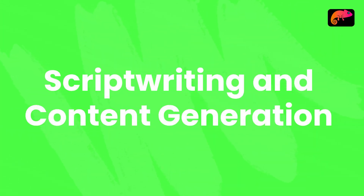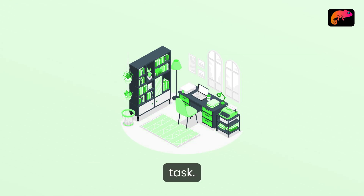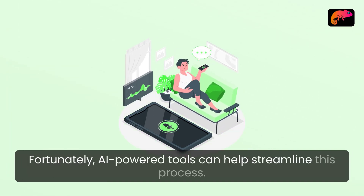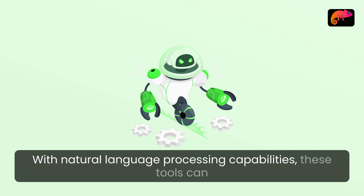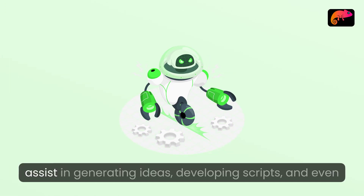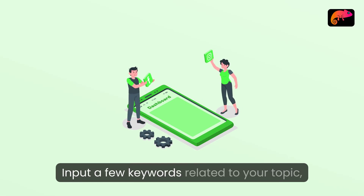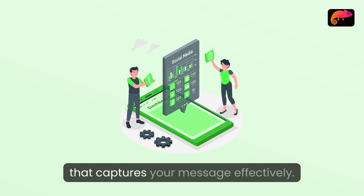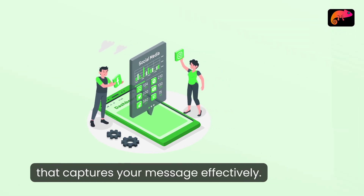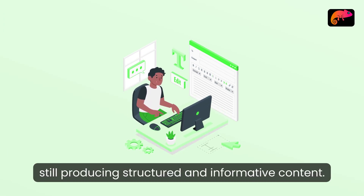Script Writing and Content Generation. Writing a compelling script can be a daunting task. Fortunately, AI-powered tools can help streamline this process. With natural language processing capabilities, these tools can assist in generating ideas, developing scripts, and even suggesting catchy headlines. Input a few keywords related to your topic, and watch as the AI produces engaging text that captures your message effectively. This allows you to focus on creativity while still producing structured and informative content.